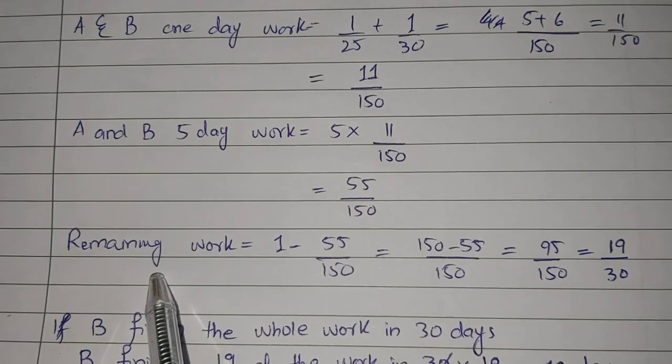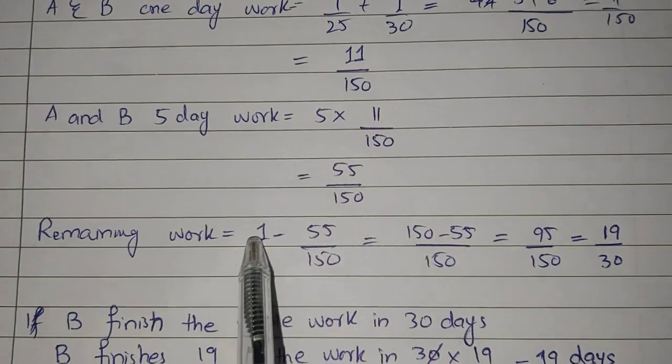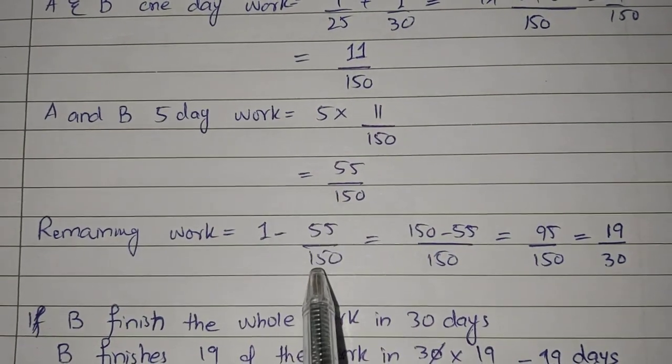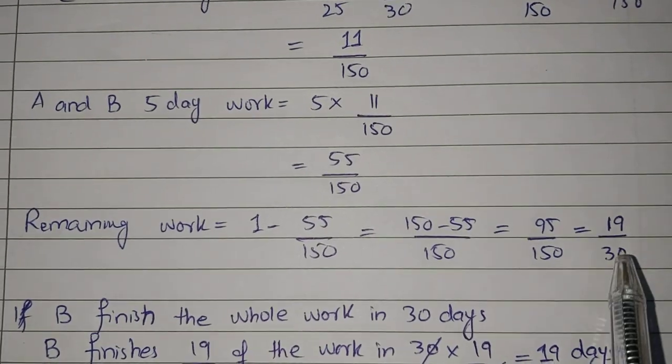Remaining work that is left: 5 days work is done, so remaining work is total work minus 55 divided by 150. This gives us 19/30.